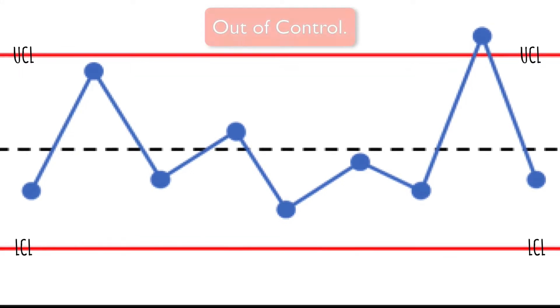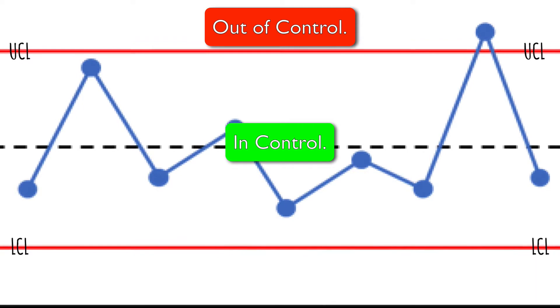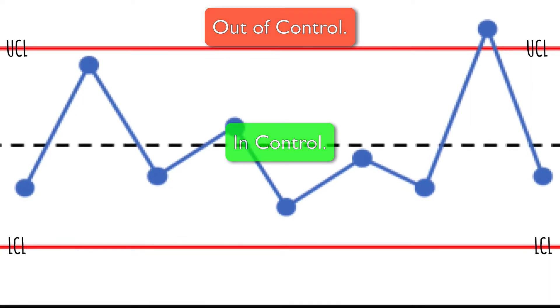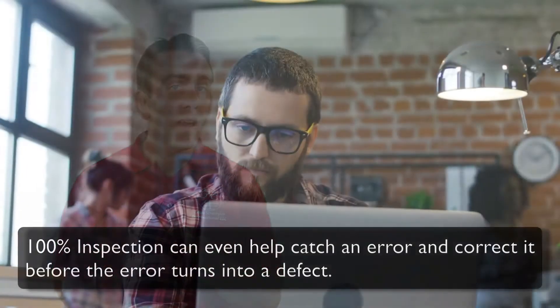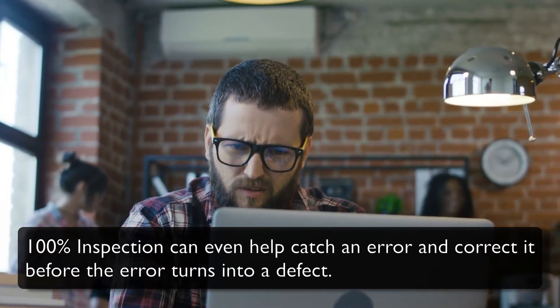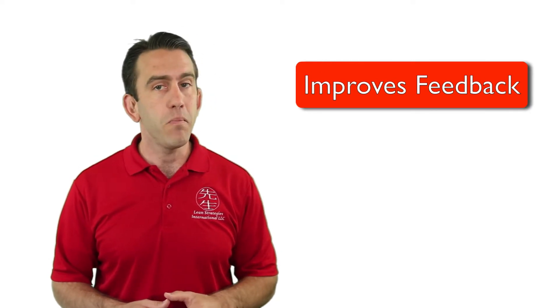Statistics in the form of control charts can show us whether or not a process is under control and do help identify processes that have variation in the output. But 100% inspection performed at the source maintains control of the process and prevents defects. It can even help catch an error and correct it before the error turns into a defect.